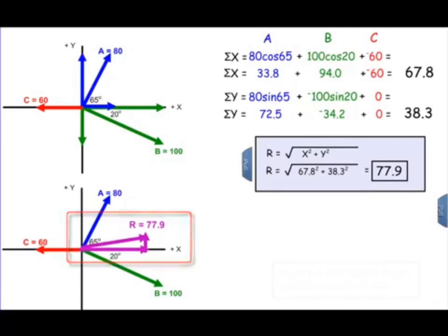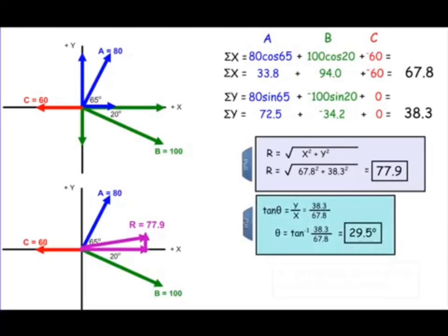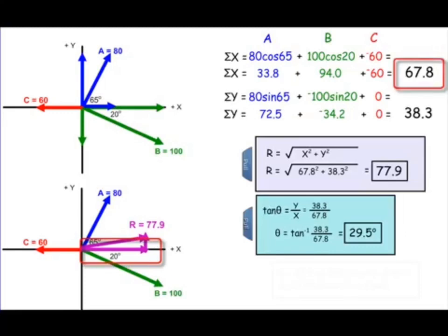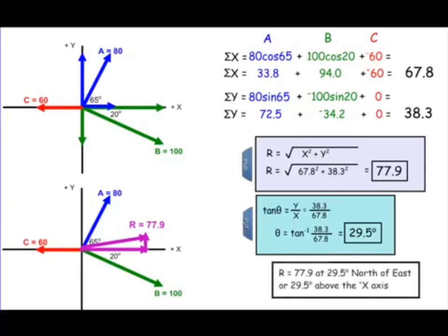To find the direction, we use the tangent function — specifically, the angle between the x-axis and the resultant. The tangent of that angle equals opposite over adjacent: the opposite side is the sum of the y components, 38.3, and the adjacent side is the sum of the x components, 67.8. Taking the inverse tangent of 38.3 divided by 67.8, we get 29.5 degrees. The resultant r is equal to 77.9 at 29.5 degrees north of east, or 29.5 degrees above the positive x-axis. Remember, vectors include magnitude and direction.